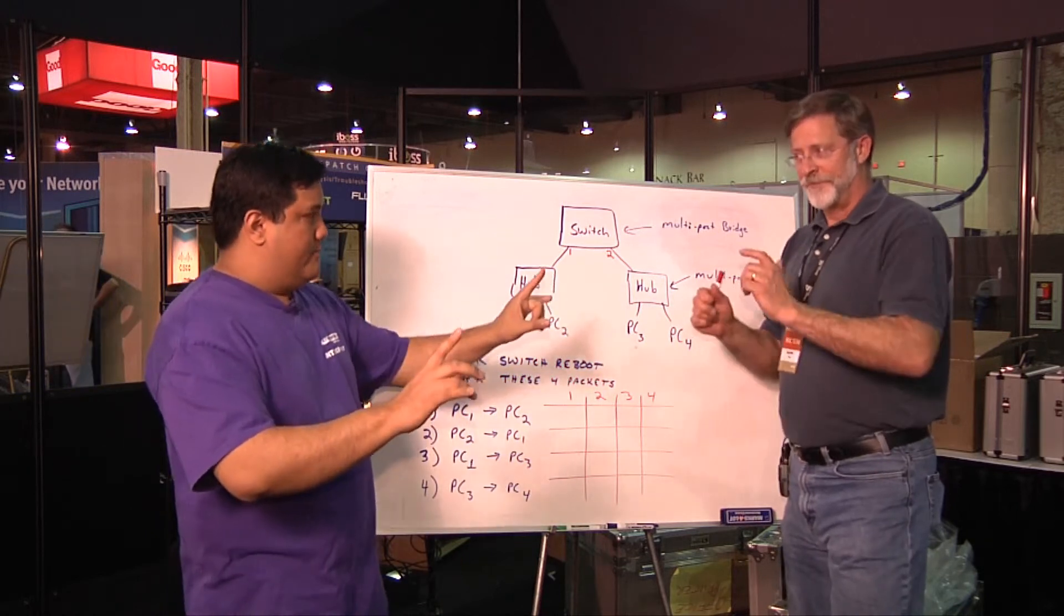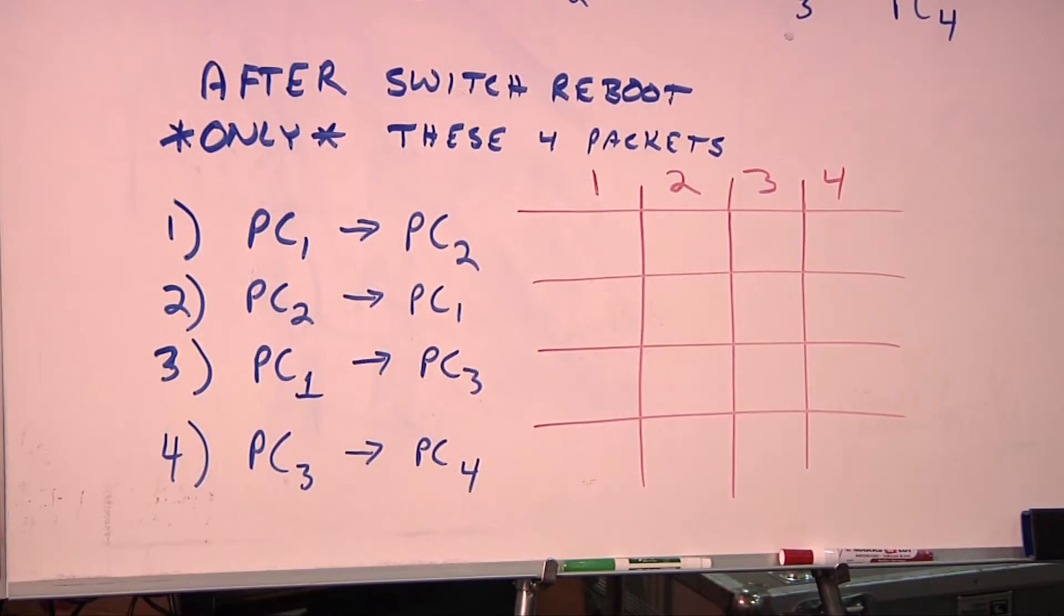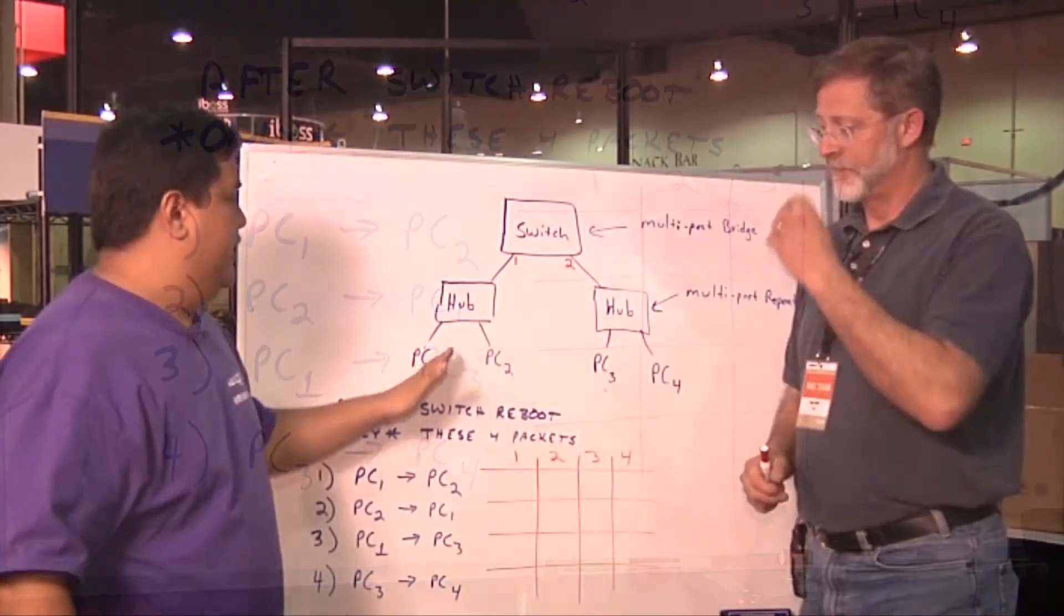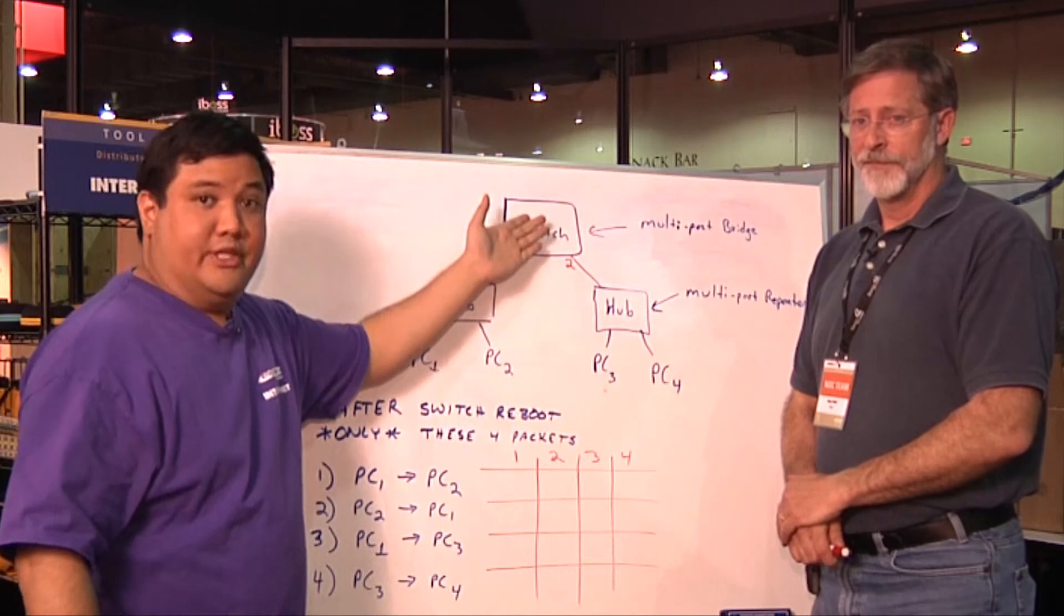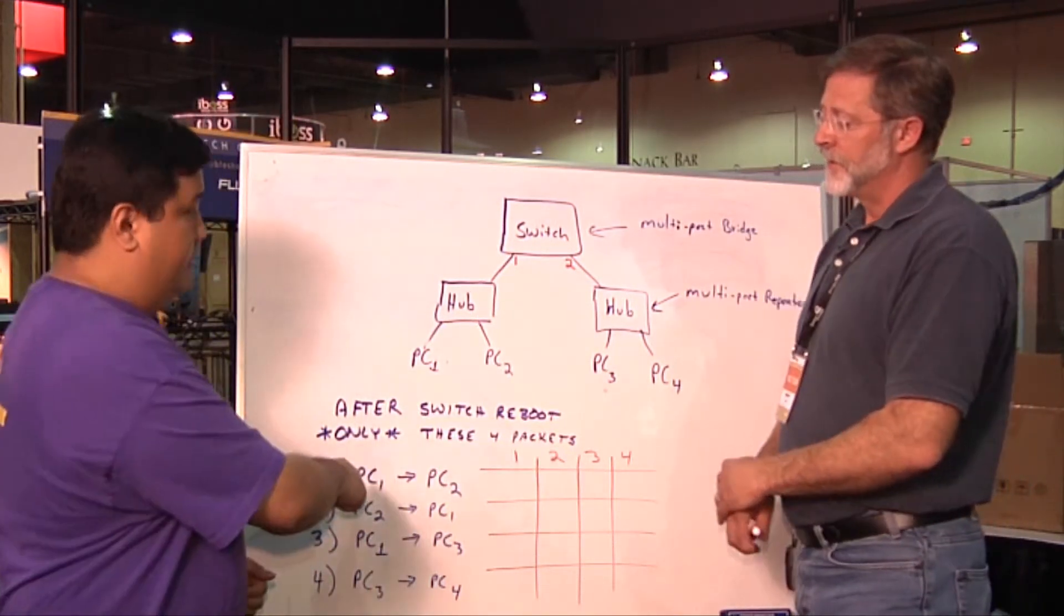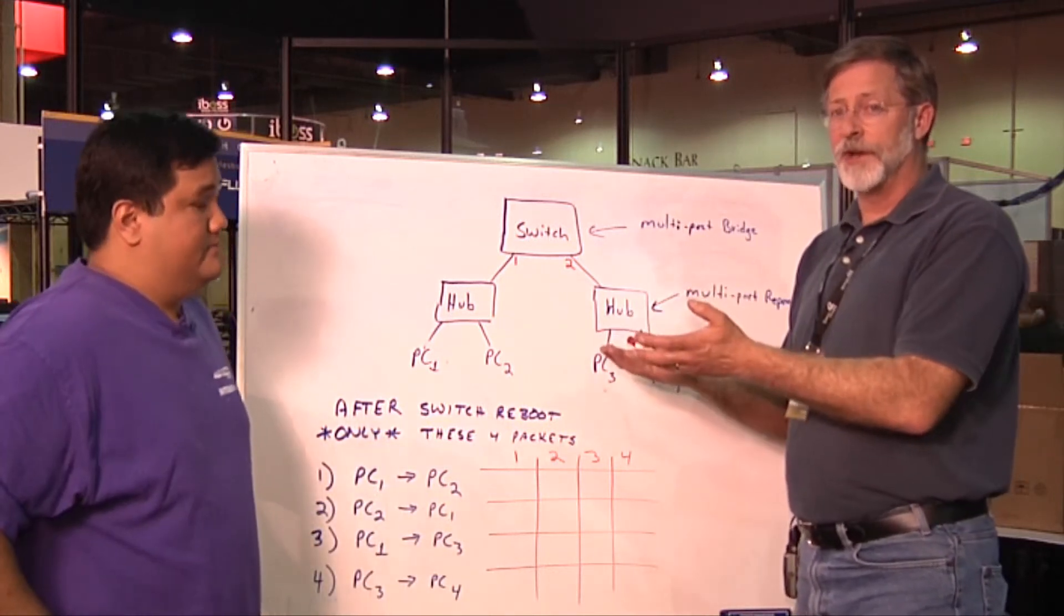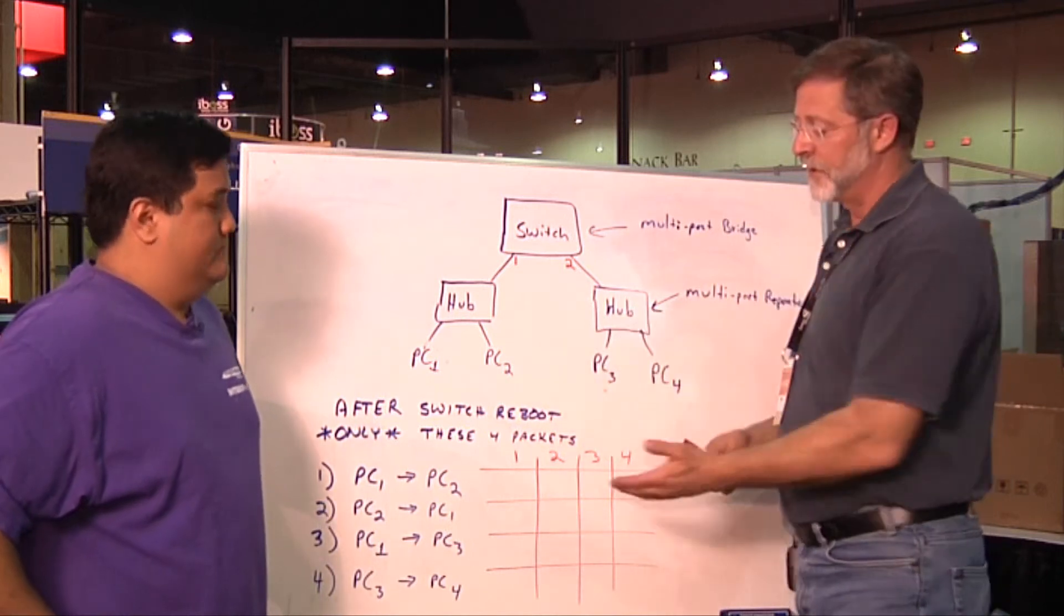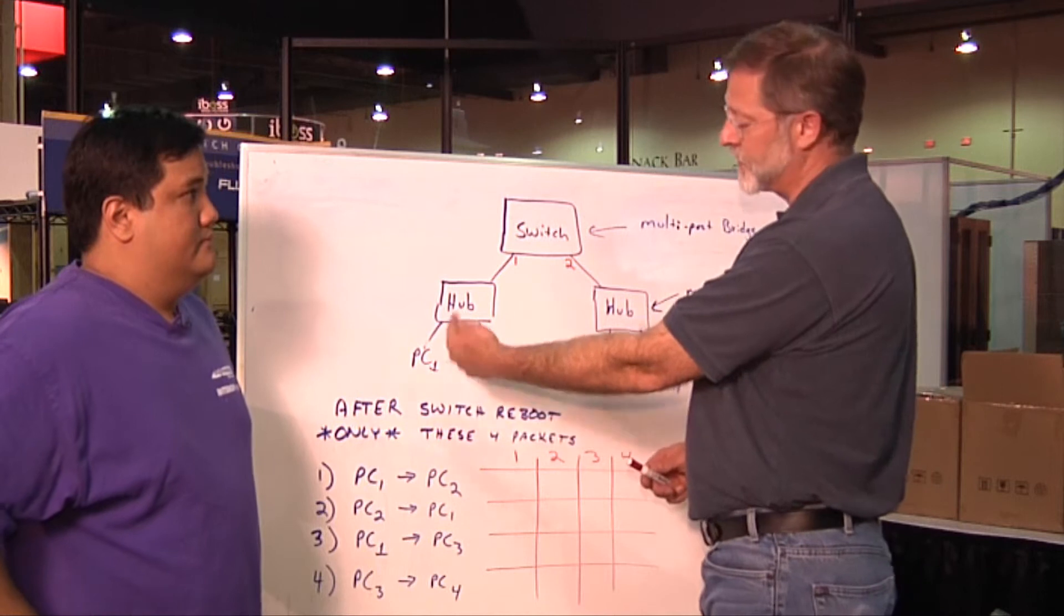Now, in your scenario, you give us four packets. These aren't conversations, these are individual packets, right? Right. So, don't make assumptions about anything else that might have taken place. Only these four. So, all we know is we've got PC1 and PC2 on one hub, which are connected to another hub through a switch, and that other hub has PC3 and PC4.